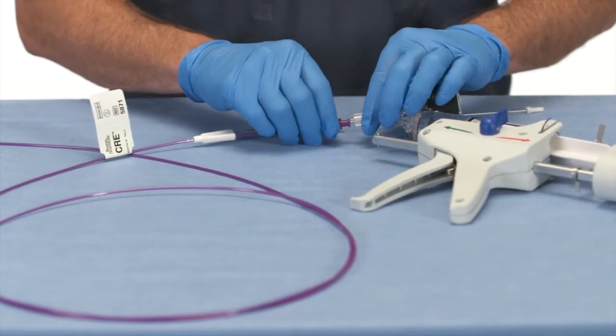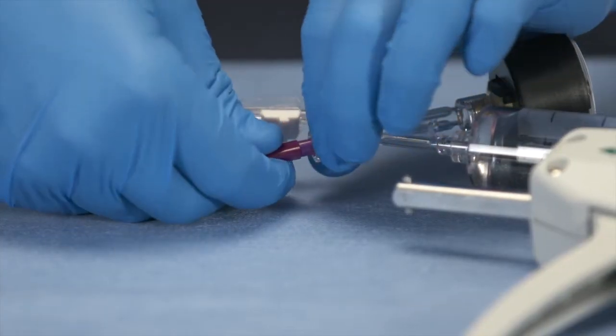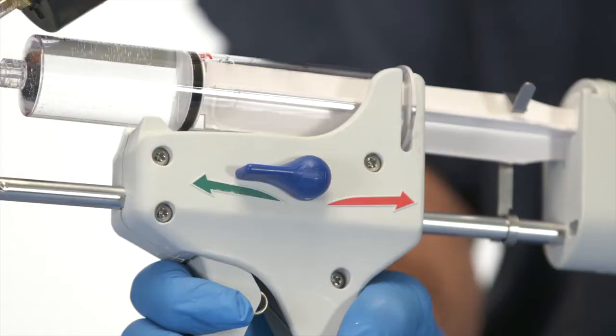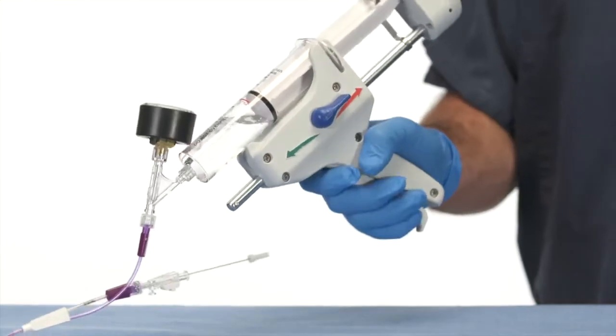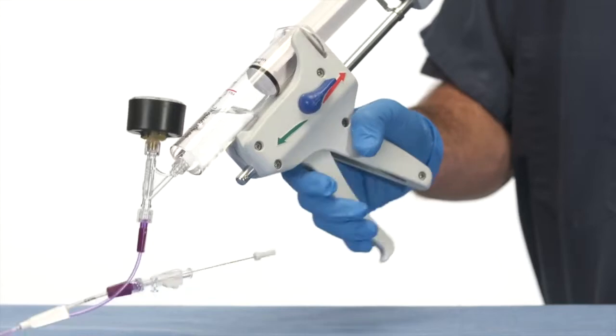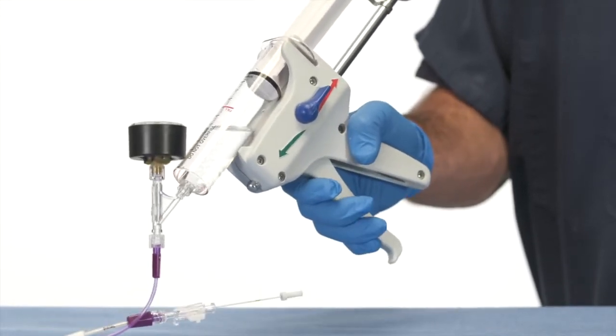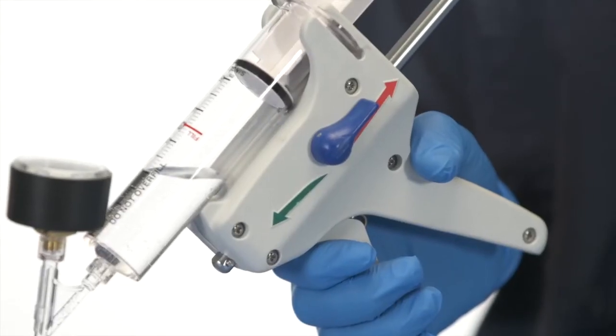Attach the CRE balloon catheter to the syringe at the luer connection. Turn the lever back to the red arrow. Pump the handle until it stops, removing air from the catheter and creating negative vacuum.